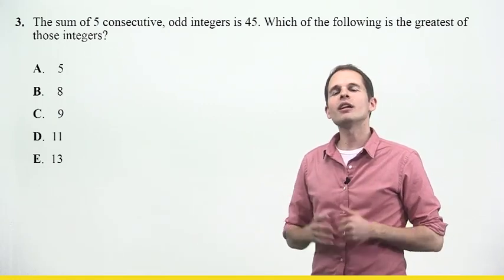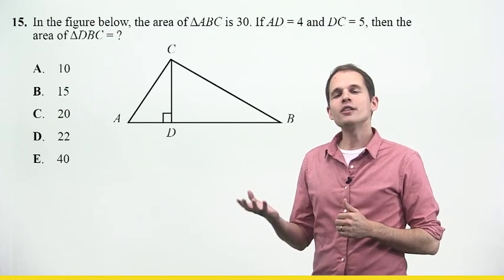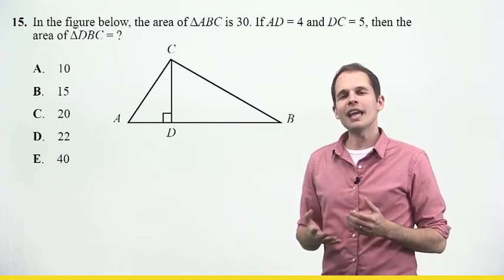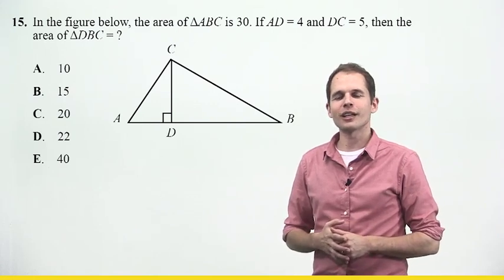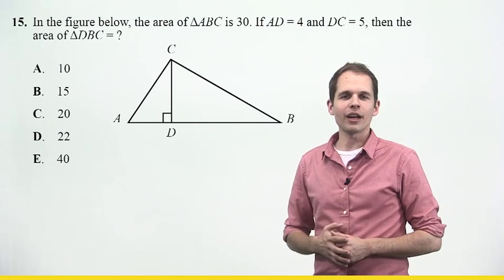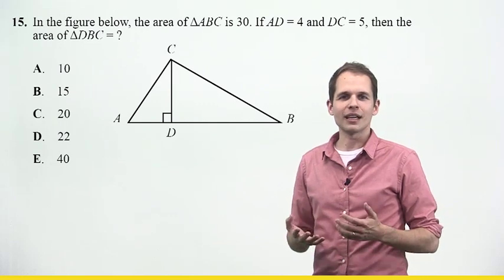Now, let's take a look at another question. This is a geometry question, and these lend themselves to ballparking. It says, in the figure below, the area of triangle ABC is 30. If AD is 4 and DC is 5, then the area of triangle DBC equals?